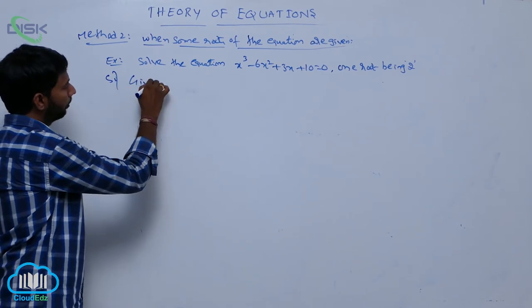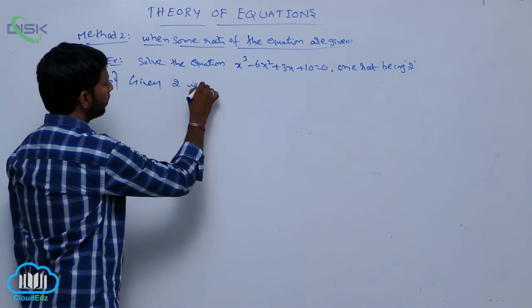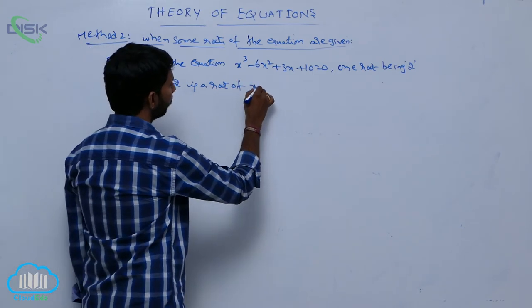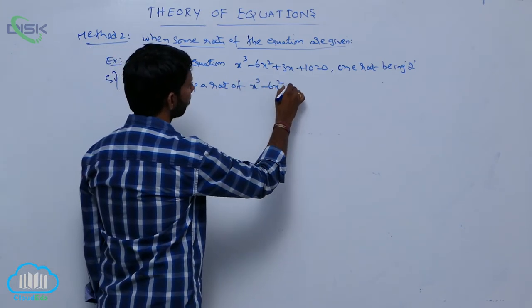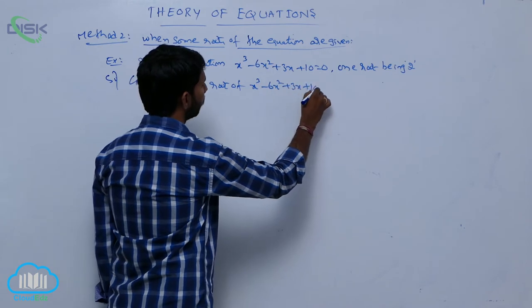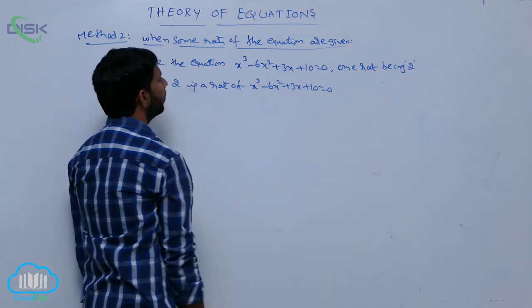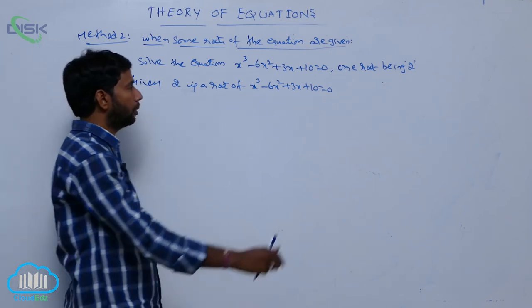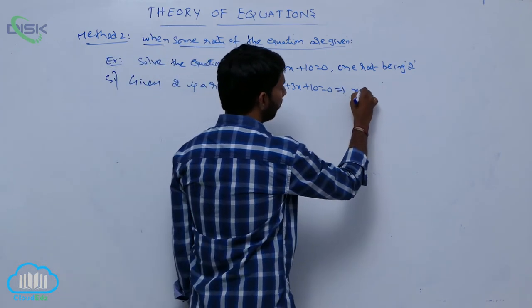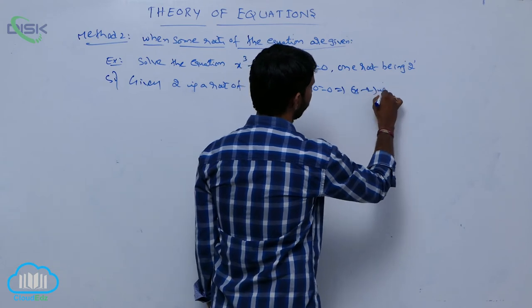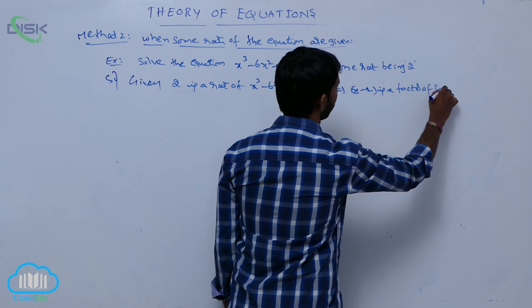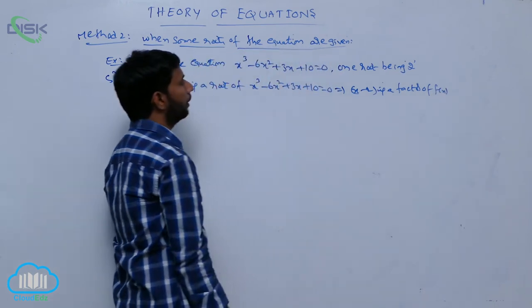Given 2 is the root of x³ - 6x² + 3x + 10 = 0, that implies x - 2 is a factor of the polynomial f(x).